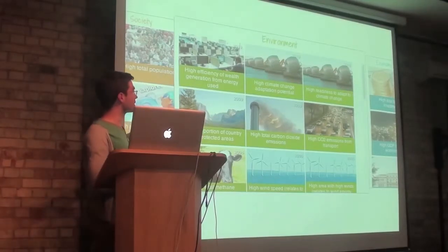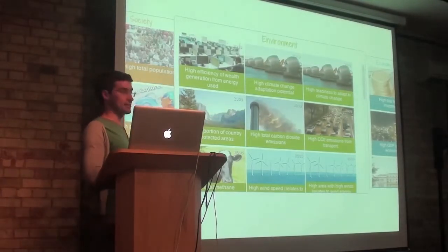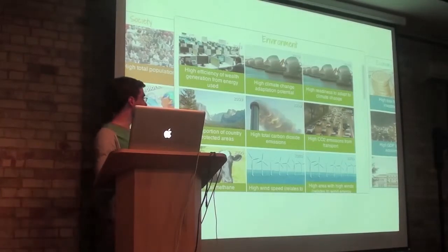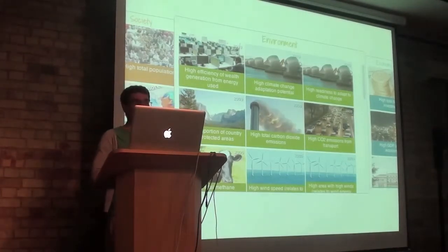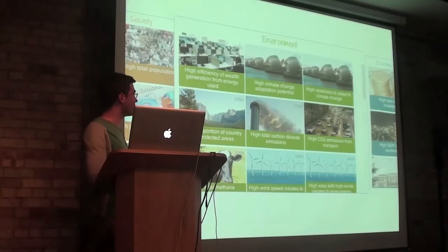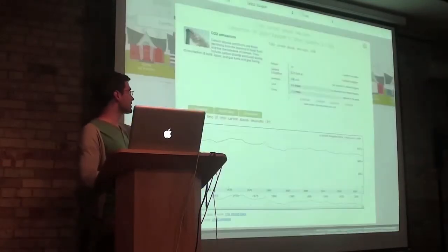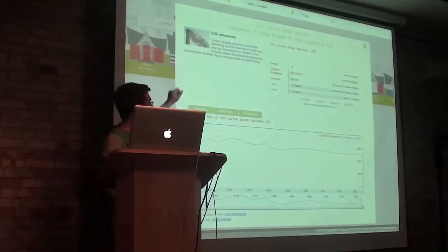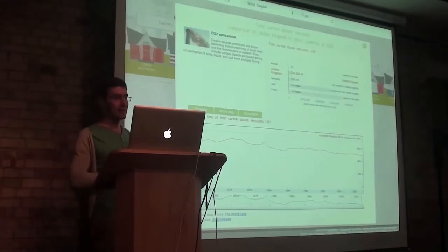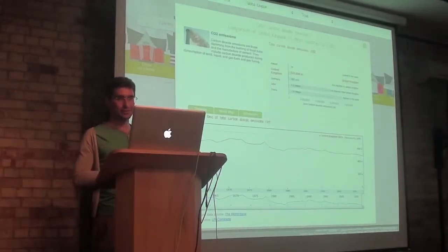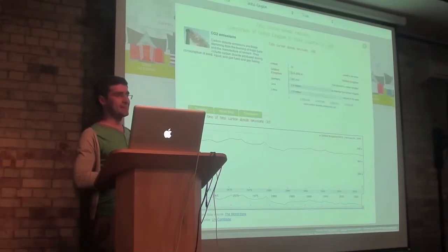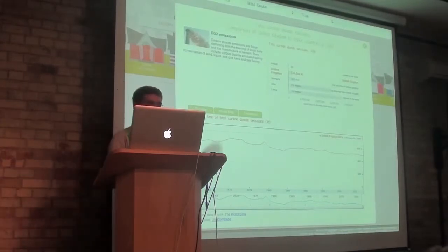Specifically with the environment, we go into all sorts of detail around the potential to adapt to climate change, the renewable energies that are used, the potential for more renewable energies, and different types of emissions. If we look at CO2 emissions here, you can see for the UK how things have been trending over time and how we compare to the worst offenders in the world and the best.